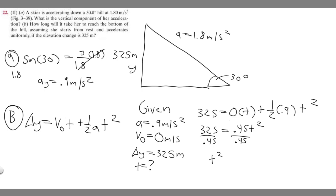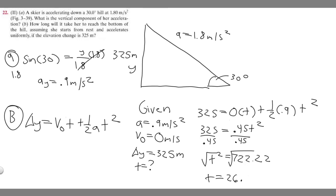Plugging 325 divided by 0.45 into the calculator gives us 722.22 and so on. To find T, we take the square root of both sides, and the square root of 722.22 gives us approximately 26.87. Rounding to the tenths place, T equals 26.9 seconds. So the answer to Part B is 26.9 seconds.